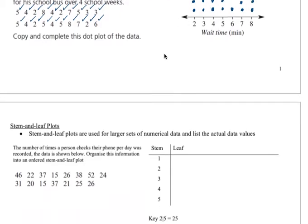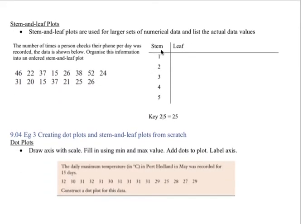Going on to creating a stem-and-leaf plot. Now we need to create a stem-and-leaf plot from this data here. This is how many times people check their phone every day. So this person checked their phone 46 times a day, 22, 37, 15, 26, 38, etc. We need to add that to this here.